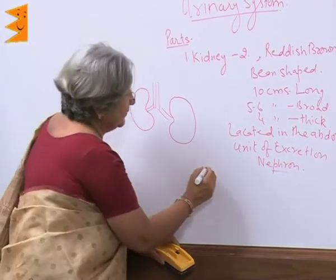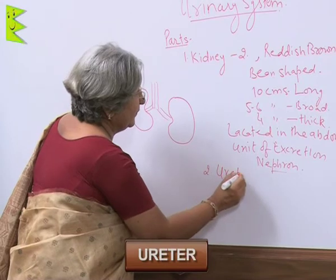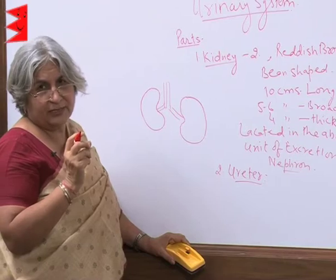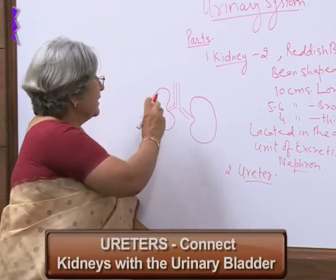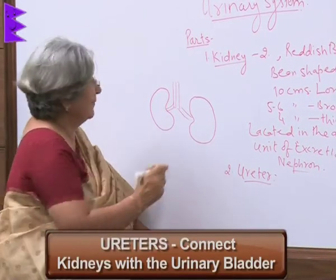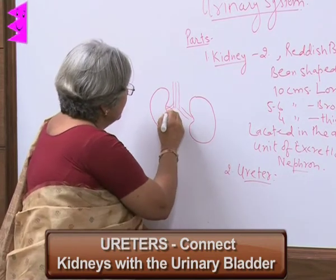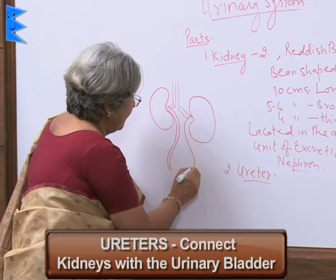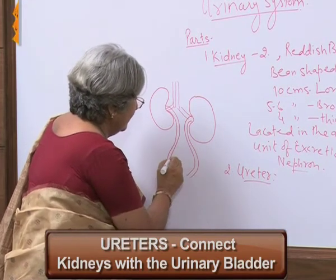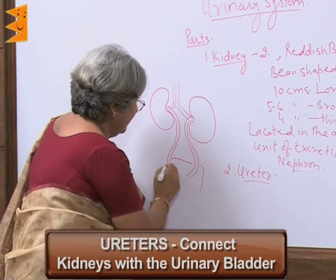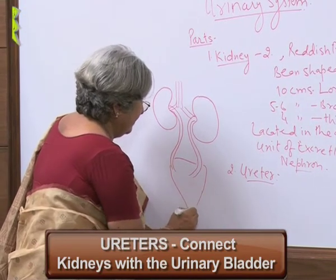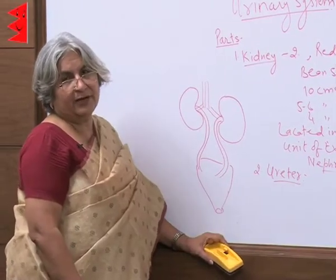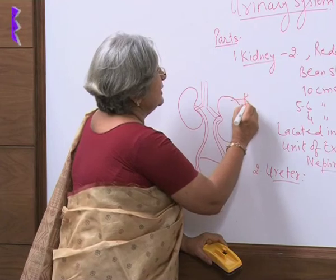Now coming to the second part, that is the ureter. Ureters are tube-like structures which connect the kidneys with the urinary bladder. They arise from the concave side of the kidney.